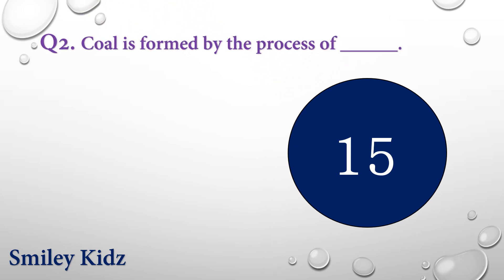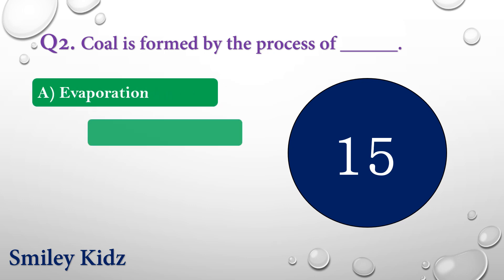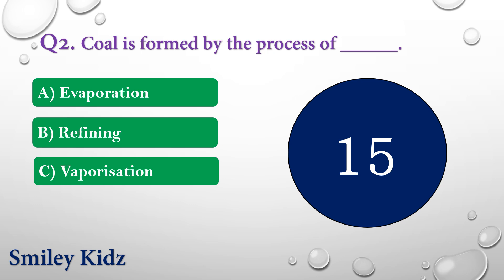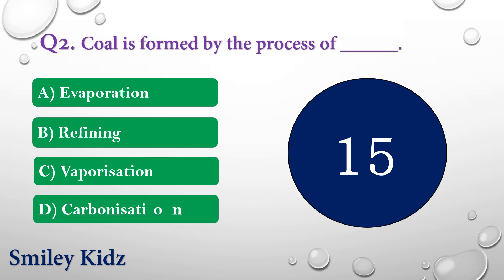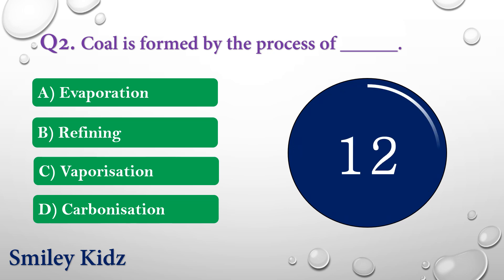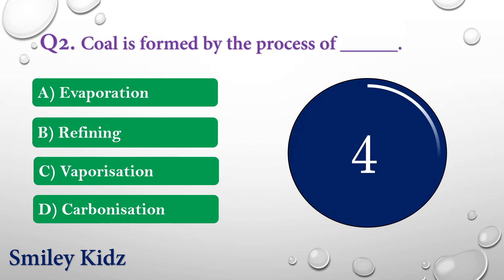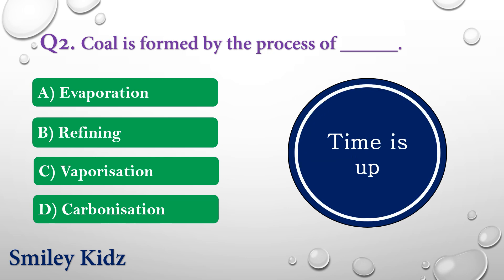Question number two: Coal is formed by the process of dash. The options are: A) Evaporation, B) Refining, C) Vaporation, or D) Carbonization. Your time is up and the right answer is option D — Carbonization. Coal is formed by the process of carbonization.